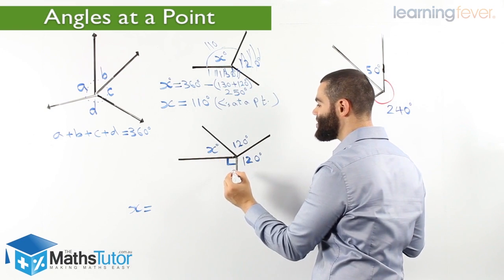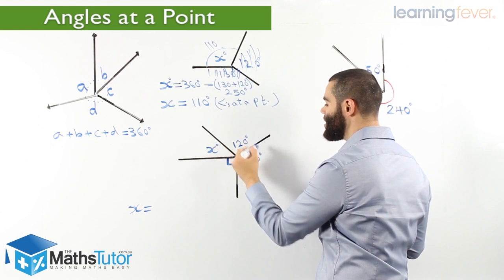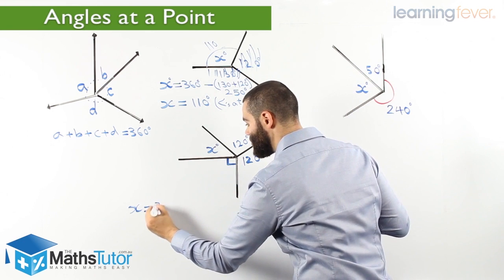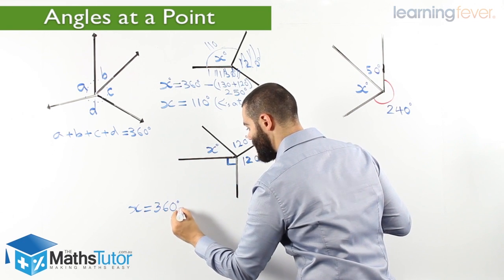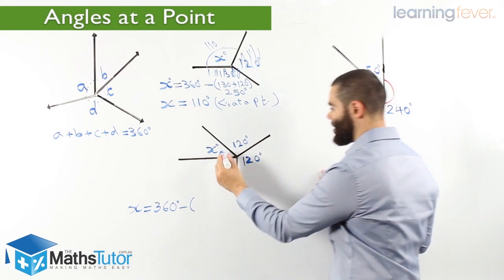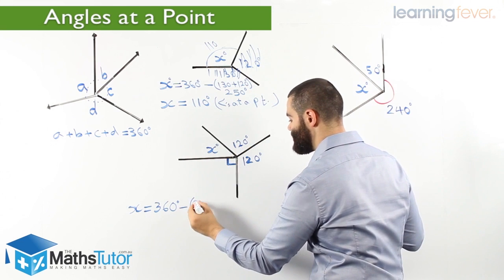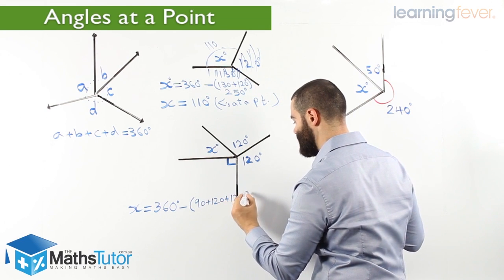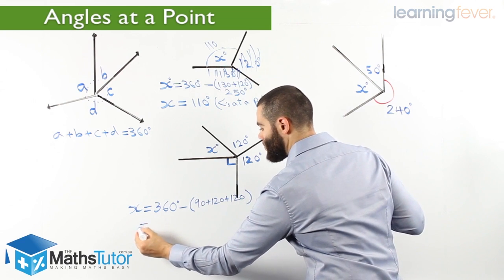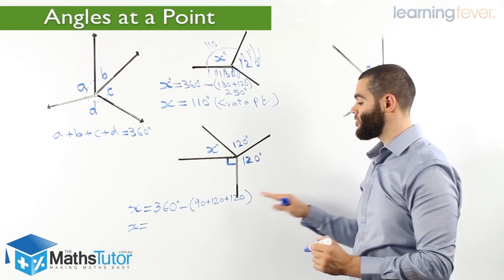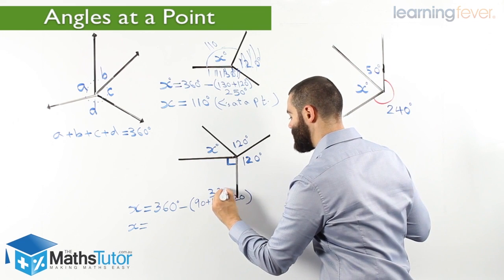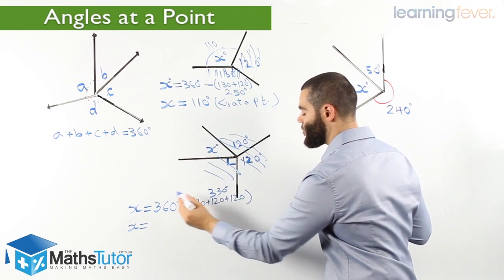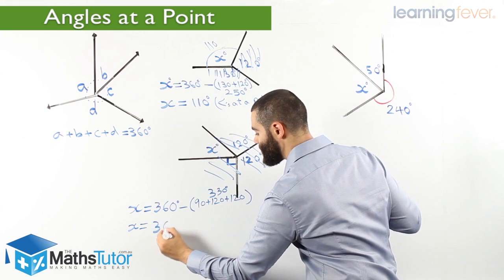X is going to equal 360, which is the total, take away 120, take away another 120, and take away the 90 here, and we're going to be left with X. So 120 and 120 make 240, plus 90 makes 330 degrees in total. So 360 take away 330 — X is going to be 30 degrees.